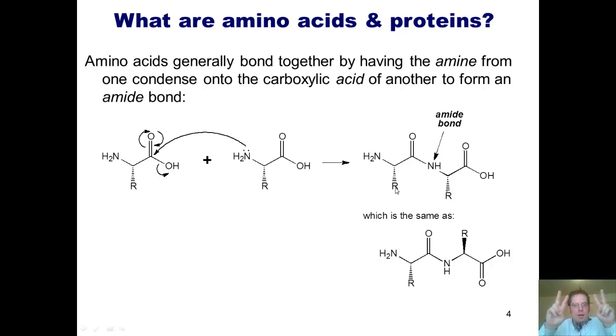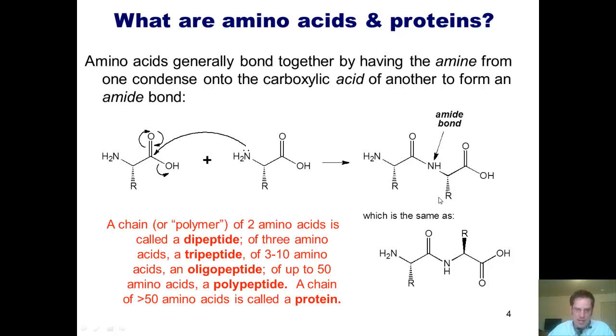Now, a chain or polymer of two amino acids bound together like the one I've shown here is called a dipeptide. A chain of three amino acids is called a tripeptide. A chain of three to ten amino acids is called an oligopeptide, of up to 50 amino acids is called a polypeptide, and a chain of more than 50 amino acids is called a protein. So, in essence, all proteins are is just one or more large chains of amino acids bound together in a specific form. So, just as a house can be assembled by binding numerous bricks together in a specified fashion, a protein is assembled by binding numerous specific amino acids together in a specified fashion. Amino acids are the building blocks of proteins.